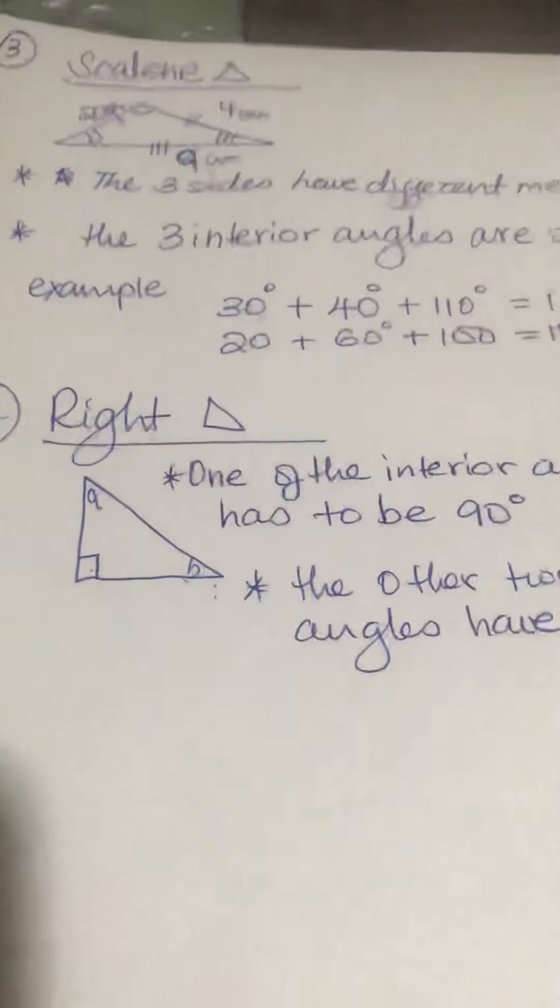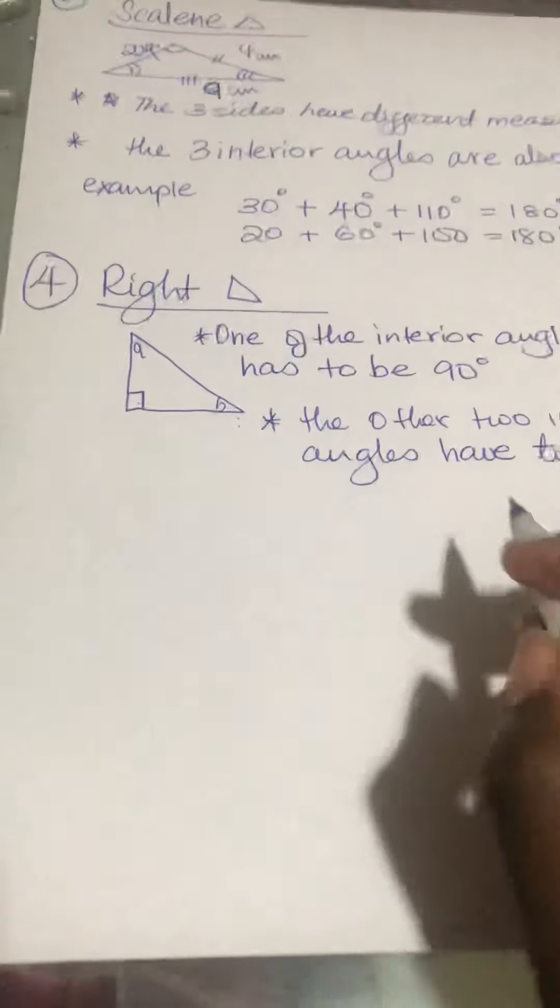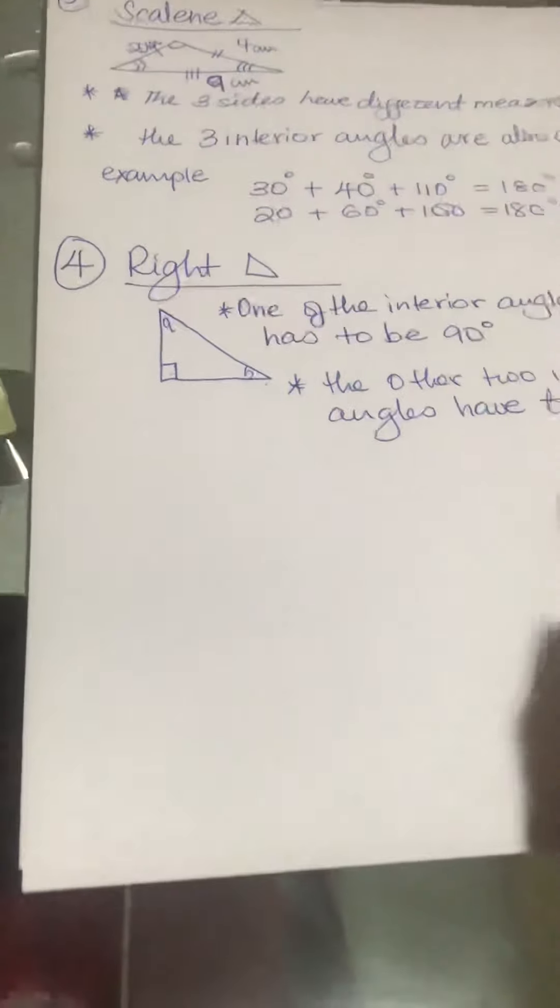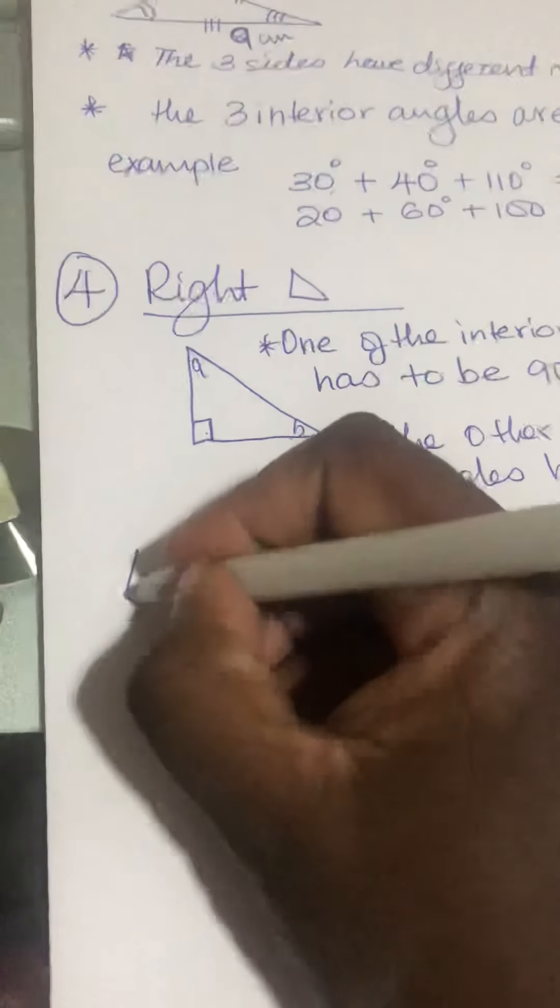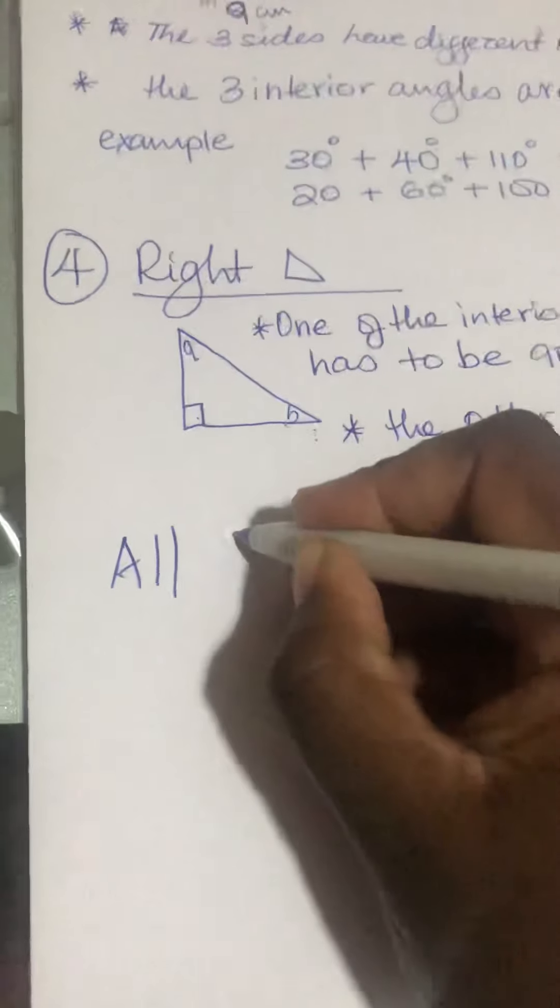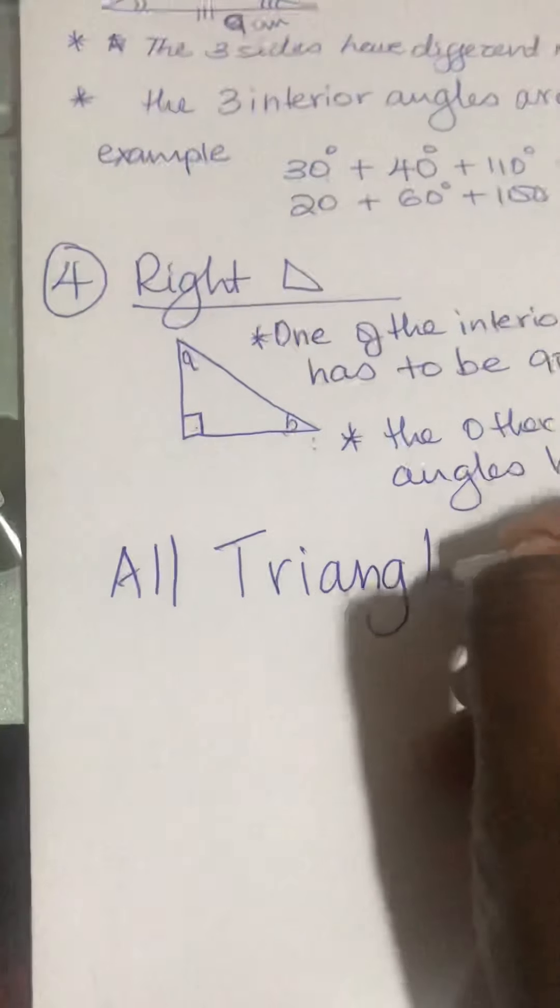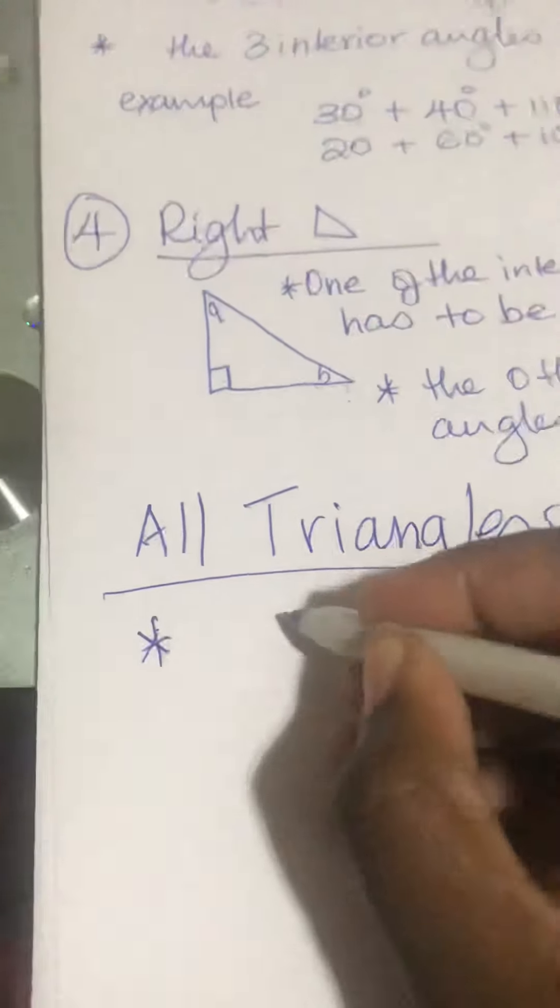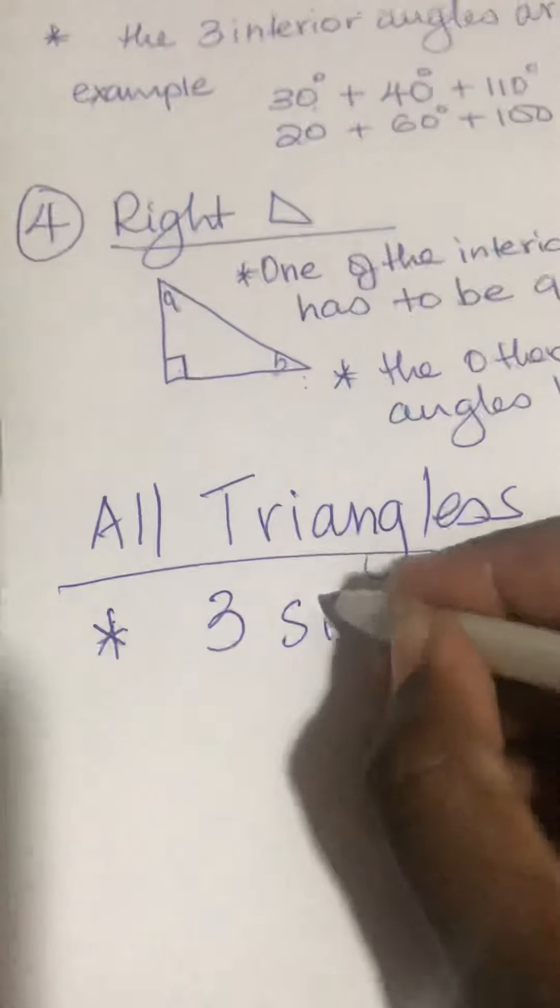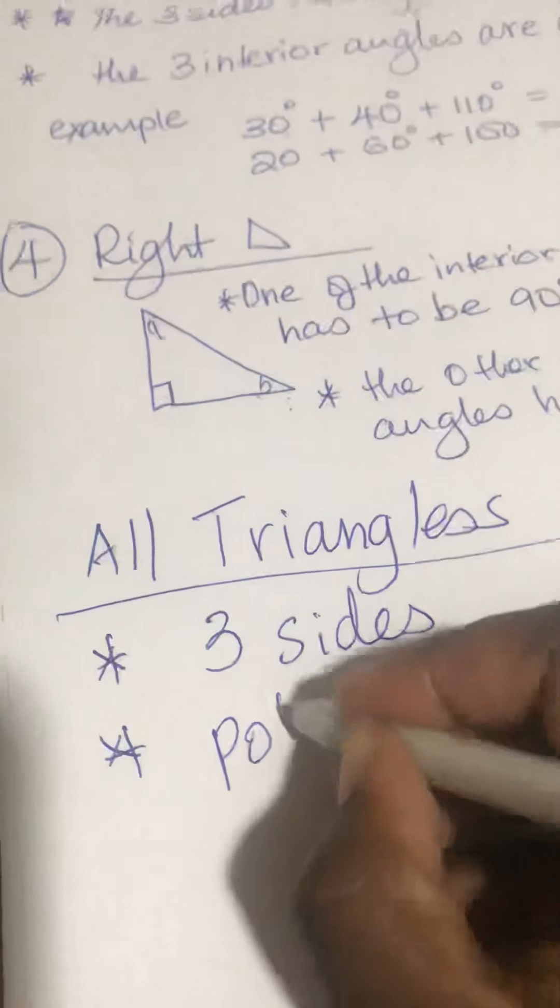Now, what do I know about all triangles? All triangles—you need to know these about all triangles. All triangles have three sides. All triangles are polygons.